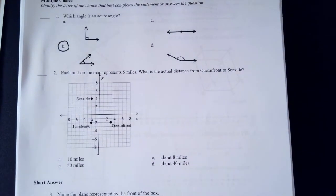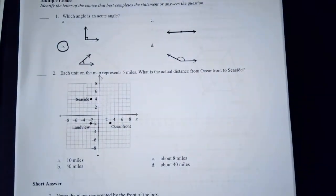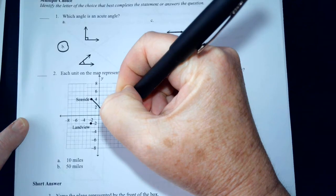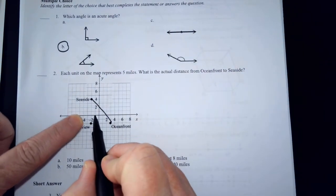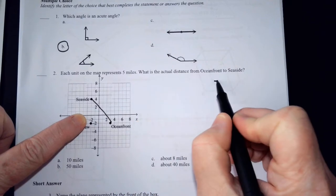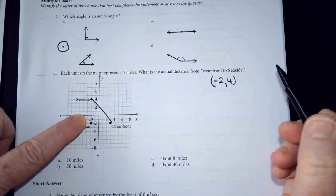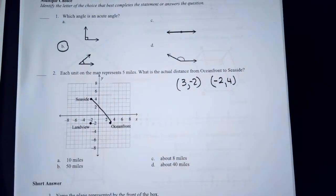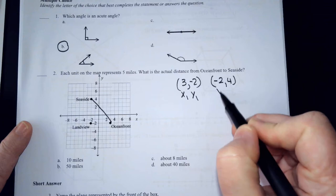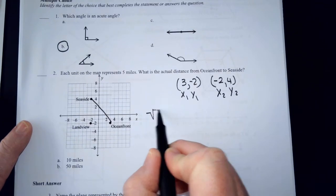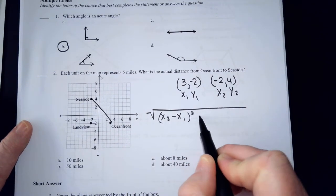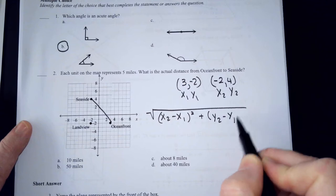Number 2, each unit on the map represents 5 miles. What is the actual distance from oceanfront to seaside? So it's this distance. What are the coordinates of seaside? Negative 2, 4. What are the coordinates of oceanfront? 3, negative 2. And it doesn't matter which one you label x1, y1. I'm just going to go with this. This will be x sub 2, y sub 2, and the distance formula. x sub 2 minus x sub 1, all squared, plus y sub 2 minus y sub 1, all squared.